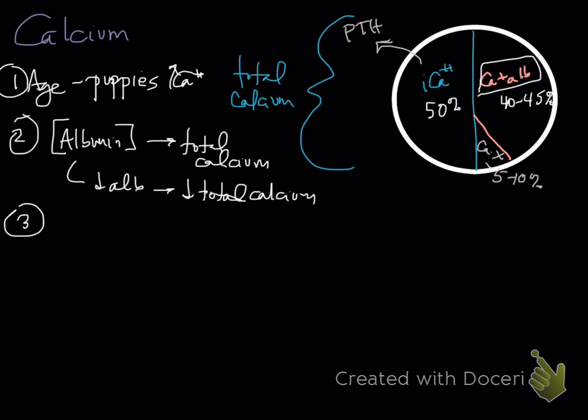A third thing that determines calcium is our GI absorption. What does this mean? This means that animals with severe intestinal disease, such as protein losing enteropathy, or issues with integrity or absorption, are going to impact calcium absorption, and that could decrease it.